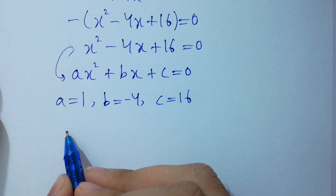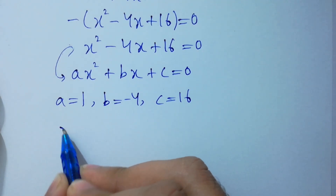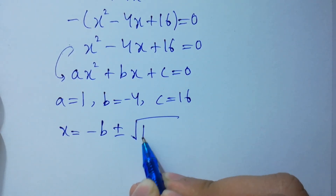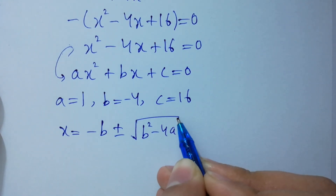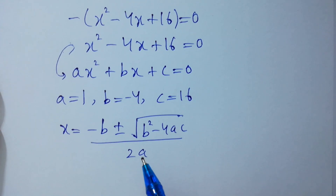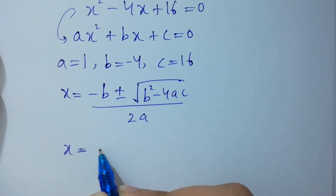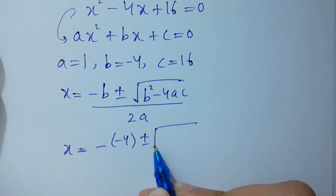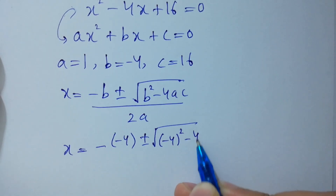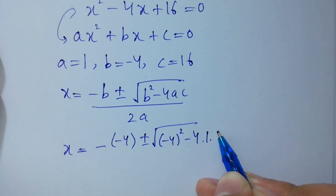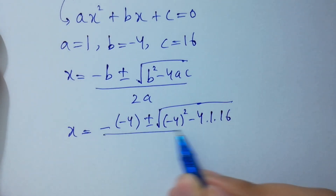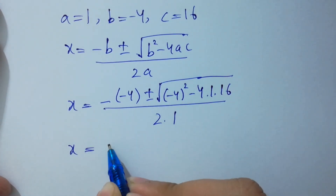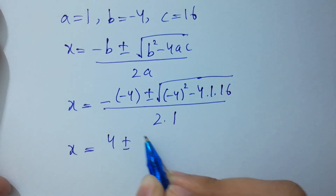Applying the quadratic formula: x equal to minus b plus or minus square root of (b squared minus 4ac), all over 2a. Substituting: x equal to minus (minus 4) plus or minus square root of (minus 4 squared minus 4 times 1 times 16), over 2 times 1. That gives x equal to 4 plus or minus square root of (16 minus 64) over 2.